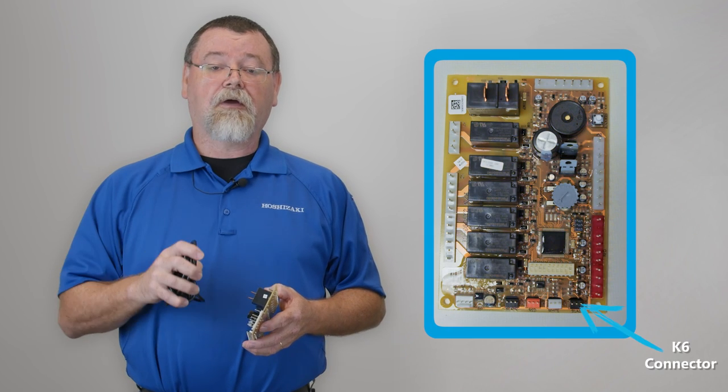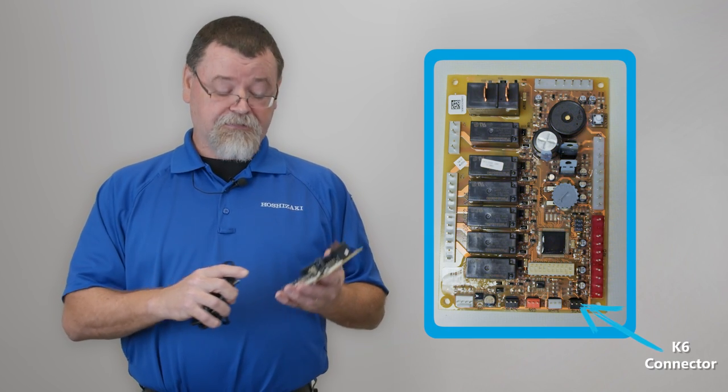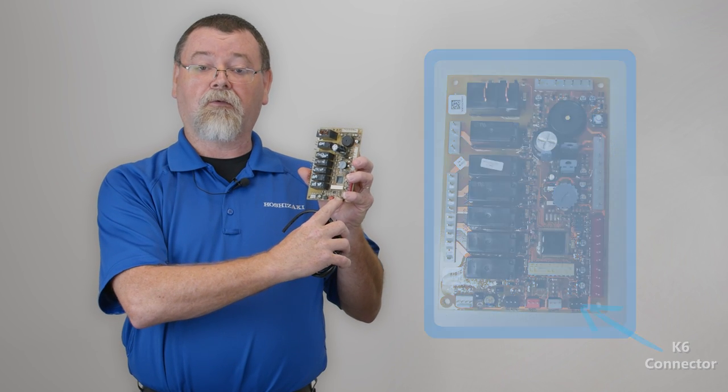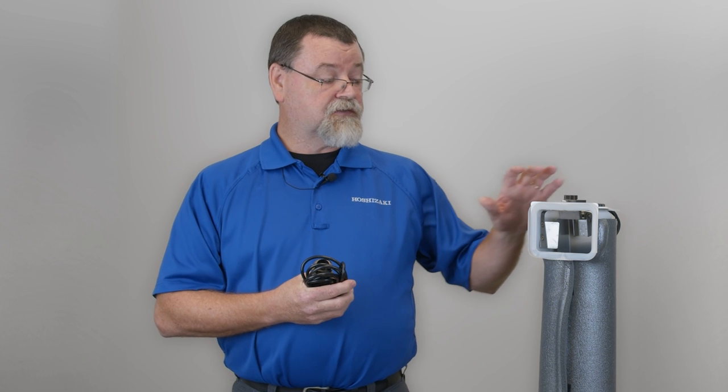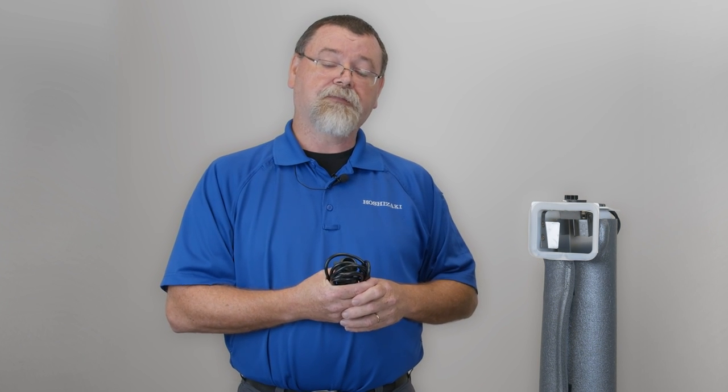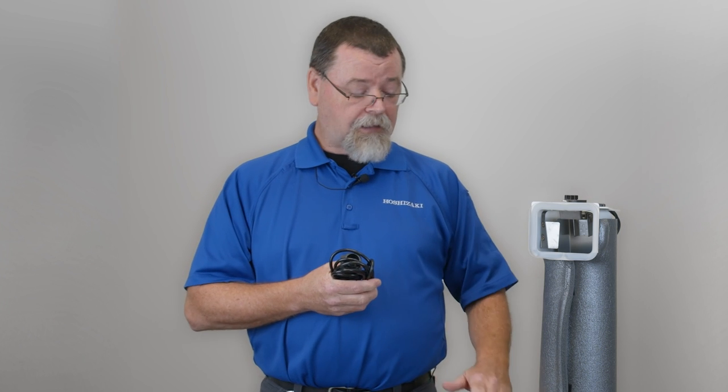The infrared bin control on a modular Flaker J model plugs up to the K6 connector on the control board. So the infrared bin control works in conjunction with the proximity switches mounted on top of the chute in the modular Flakers. Should the infrared fail, ice backs up into the chute, opens the switch, and the shutdown process starts.